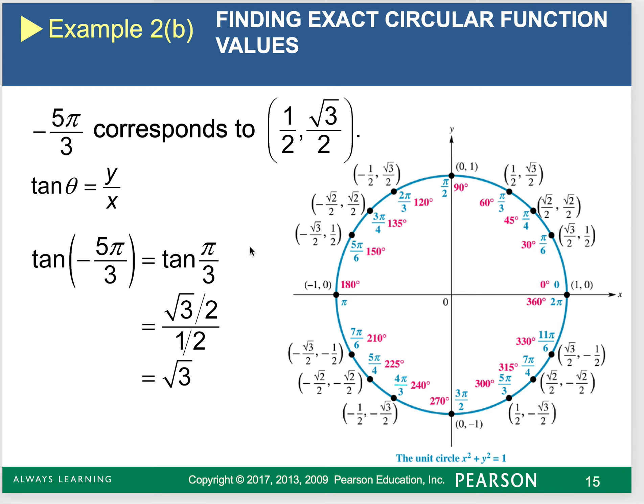You could actually write this vertically as square root of 3 over 2 divided by 1 half. And that may help you get there. Or you can remember to divide fractions, you multiply by the reciprocal. So this would be square root of 3 over 2 times 2 over 1.